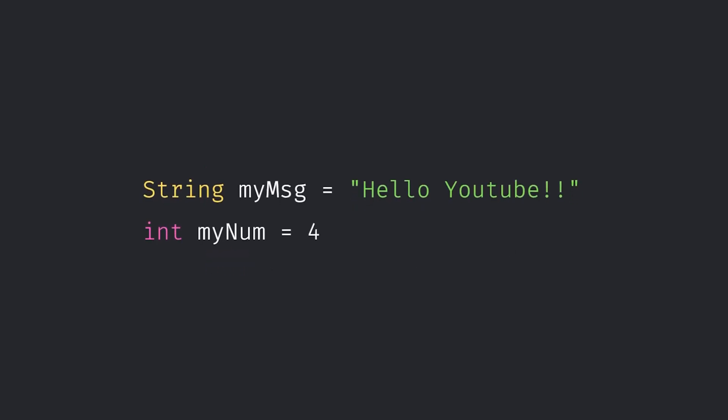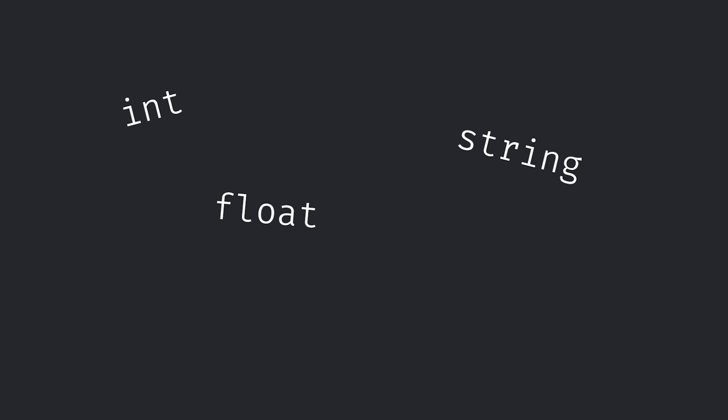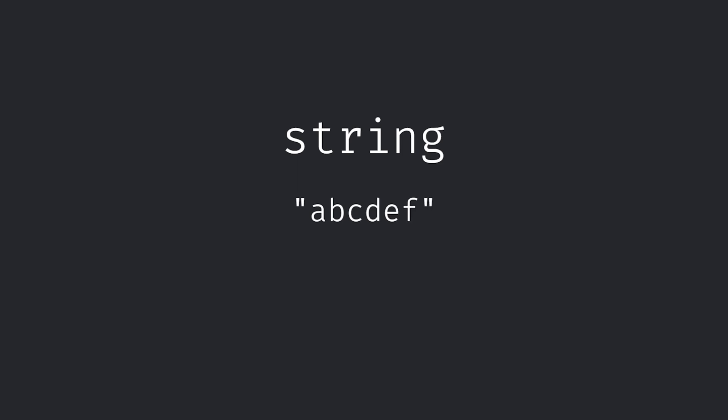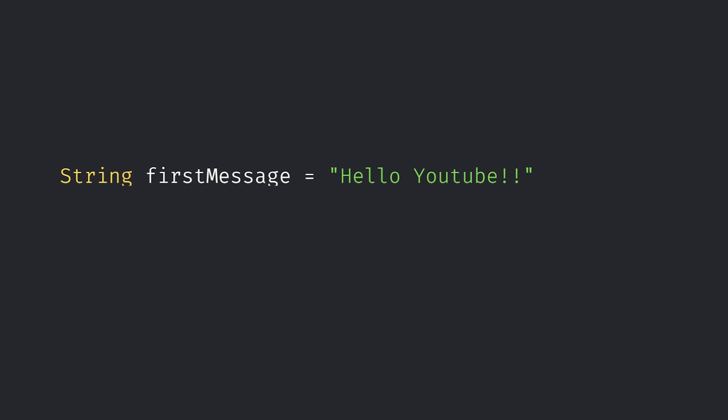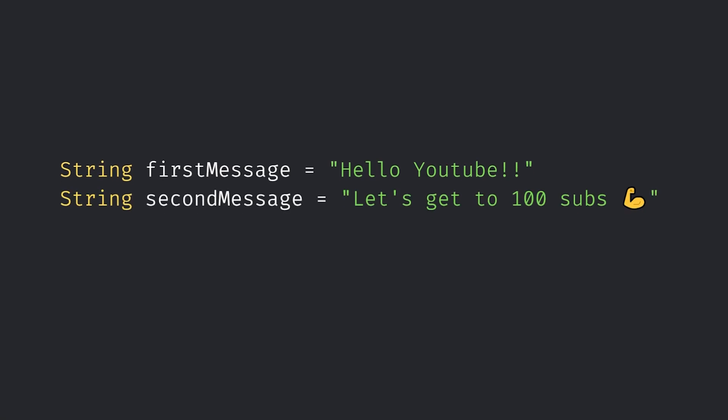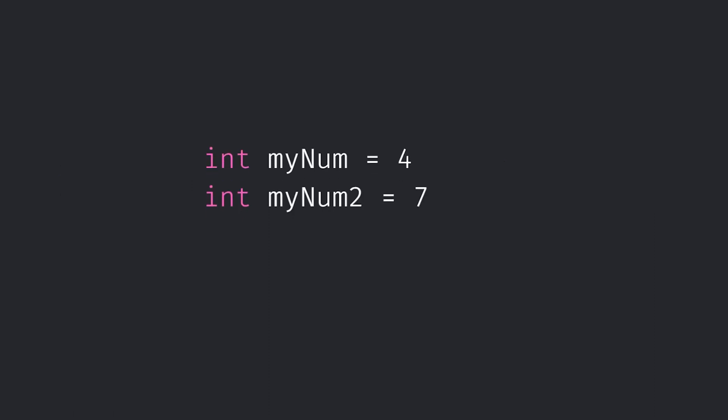You'll notice with these two variables that one has quotation marks and one doesn't — they're just numbers. This brought us to the next topic of week two: data types. Data types are simply a way of classifying variables to indicate what type of data might be inside. Some basic data types include integer, string, float, boolean, etc. A string in programming is essentially a sequence of characters, used for messages and words. Looking back at our example, the pre-made messages would be strings noted by the quotation marks, and the number variables would be integers.